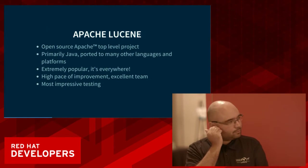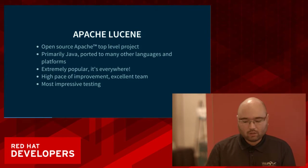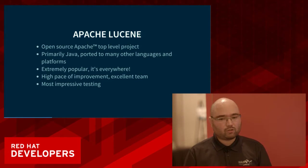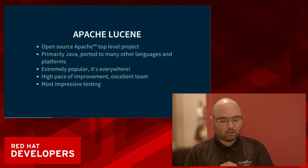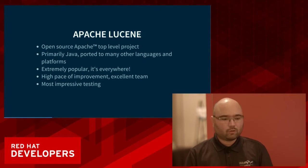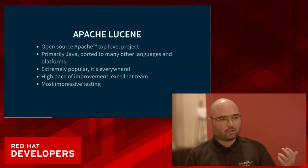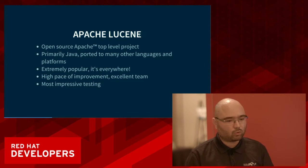So what is Apache Lucene? It's an extremely popular open source project from the Apache community, written primarily in Java but with ports in many other languages. It's deployed everywhere. It's a truly open source project — no strong branding or marketing behind it — but if you look around even here at JavaOne, there are lots of technologies presented that are embedding Lucene under the hood in some form.